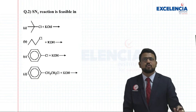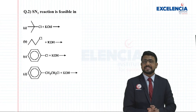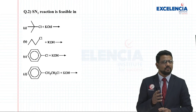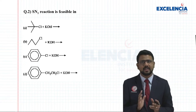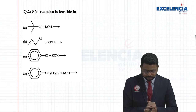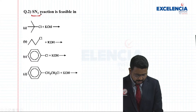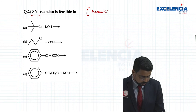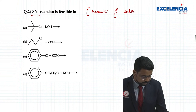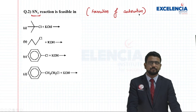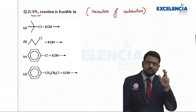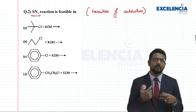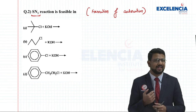The next question: SN1 reaction is feasible in which case? All options are either alkyl halides or aryl halides. For SN1 reaction, we know it proceeds through the formation of a carbocation as an intermediate. So we need to check in which of these reactions the carbocation formed is more stable — whichever is more stable will favor the SN1 reaction.